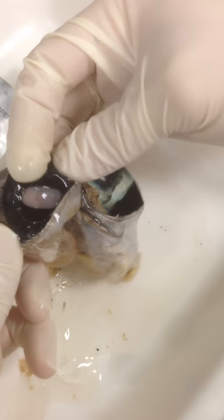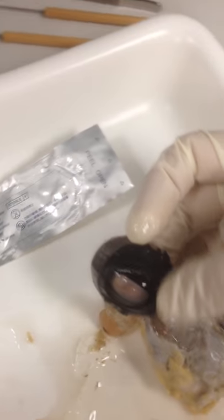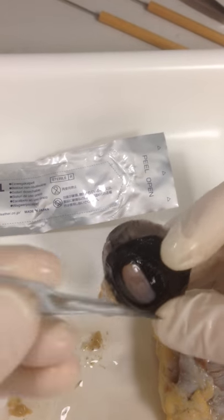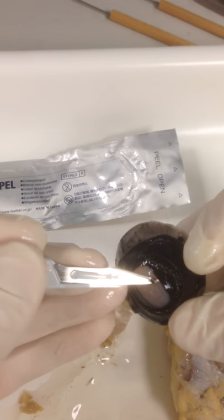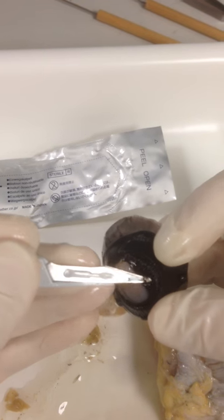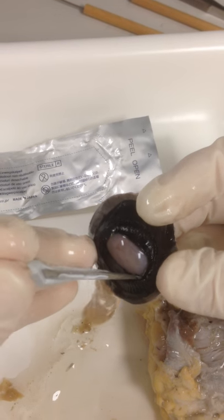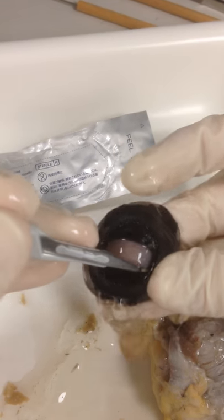Now, if I turn this inside out like this, you can see that the iris is actually kind of a flap of tissue here. If I can get this scalpel underneath it.